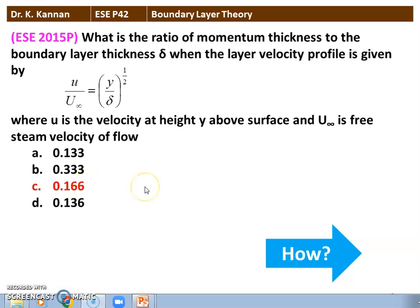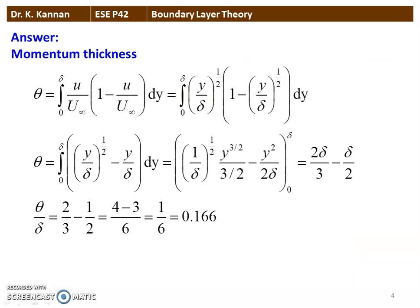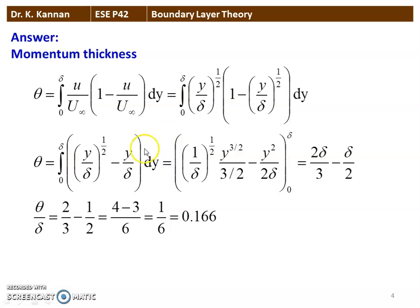We calculate momentum thickness θ divided by boundary layer thickness δ. The momentum thickness θ is the integral from 0 to δ of (u/u∞)(1 - u/u∞) dy. Since u/u∞ = (y/δ)^(1/2) is given in the problem, substituting: integral from 0 to δ of (y/δ)^(1/2) × (1 - (y/δ)^(1/2)) dy. Expanding: integral of (y/δ)^(1/2) minus (y/δ) dy. Integrating the first term: (1/δ^(1/2)) × y^(3/2) divided by (3/2), minus y²/(2δ).